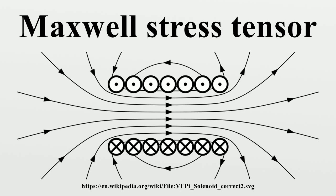This expression contains every aspect of electromagnetism and momentum and is relatively easy to compute. It can be written more compactly by introducing the Maxwell stress tensor, and notice that all but the last term of F can be written as the divergence of the above. The second term on the left side can be interpreted as the time derivative of the electromagnetic field's momentum density.